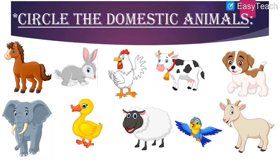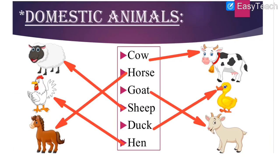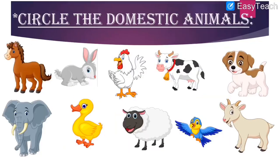Our next worksheet. The exercise is to circle the domestic animals. We have to circle the pictures of domestic animals from the 10 given animals. Not all 10 are domestic animals — only 6 of them are domestic. We have to identify which 6 out of these 10 are domestic animals.